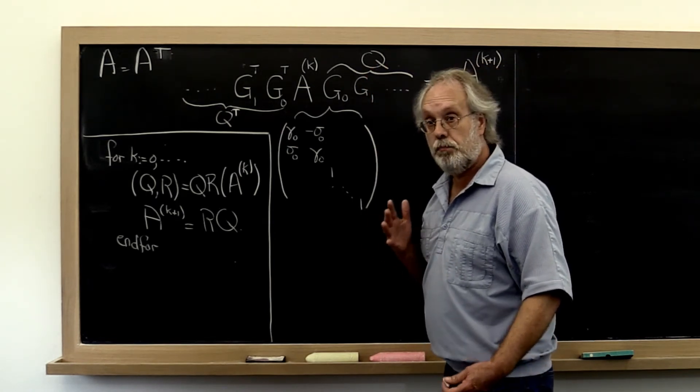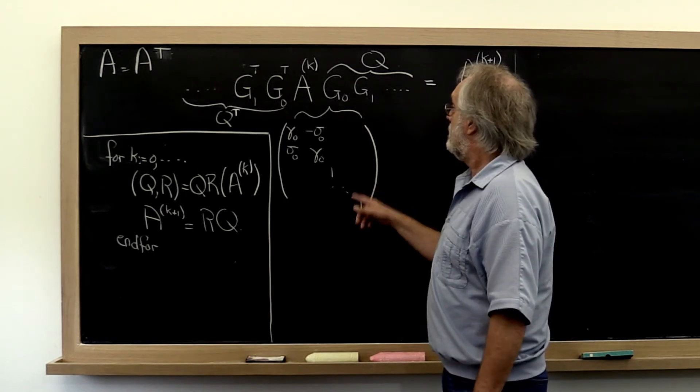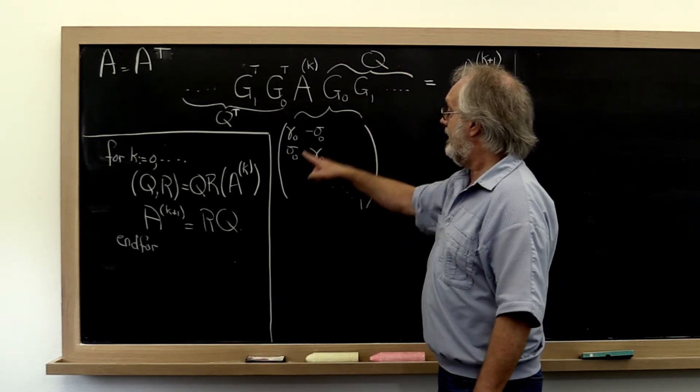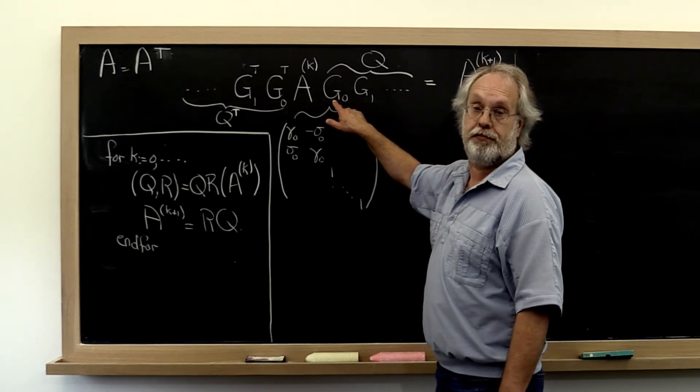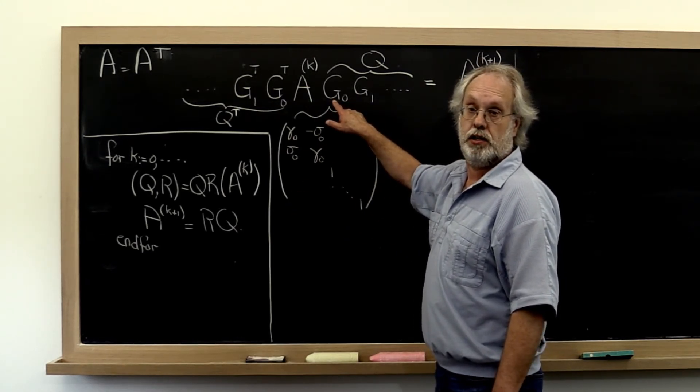The point being that our matrix Q, its first column, is completely determined by the first Givens rotation that we compute.